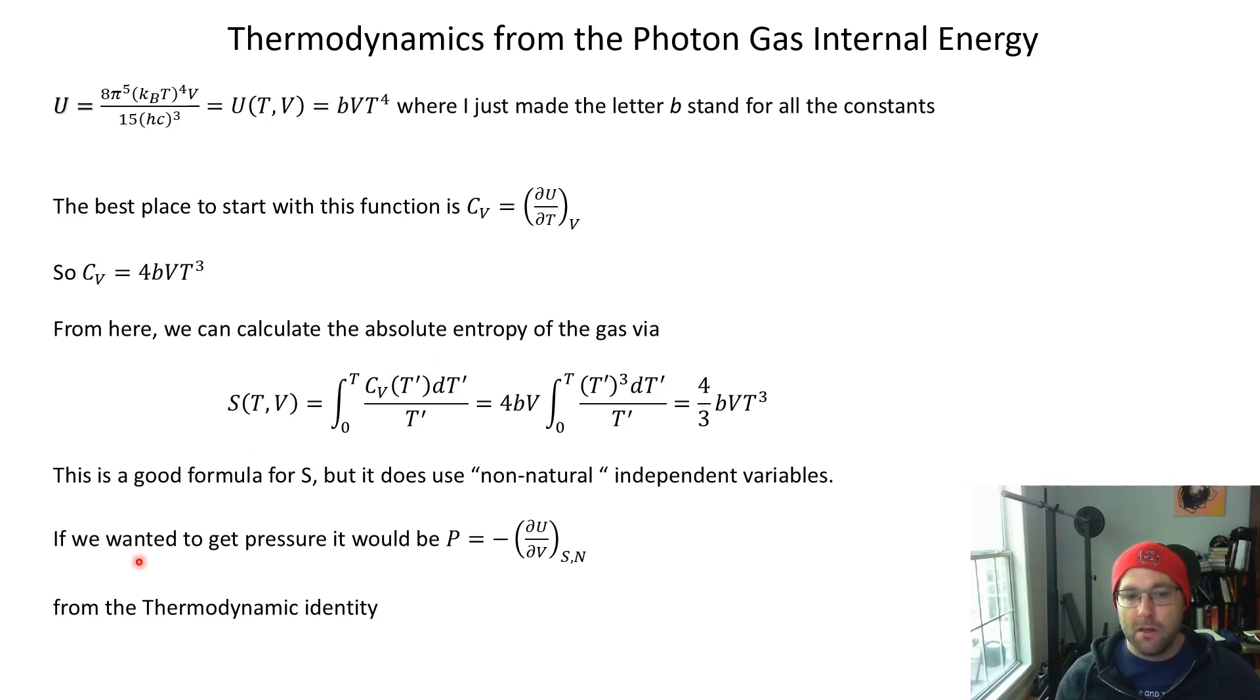Let's say we want to calculate the pressure of the photon gas—that's a really important quantity. It's something you could really measure, like putting a pressure sensor in front of a black body to see what forces per unit area are applied by the radiation. Radiation pressure is a real thing. If we want to get pressure we need to calculate partial of U with respect to V at constant entropy and particle number. We can't apply this definition to this formula above because there's no entropy for us to hold constant.